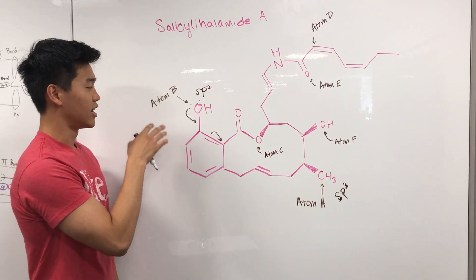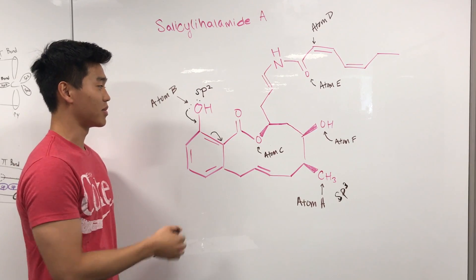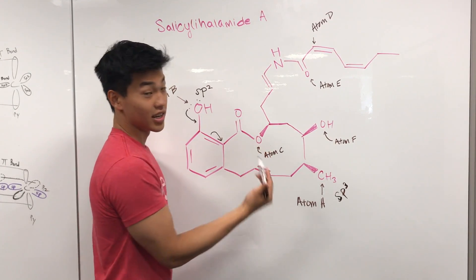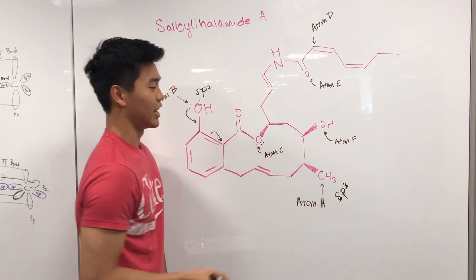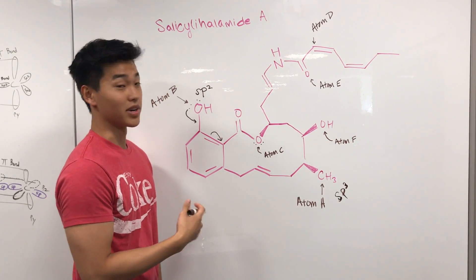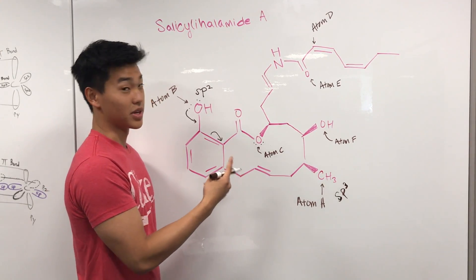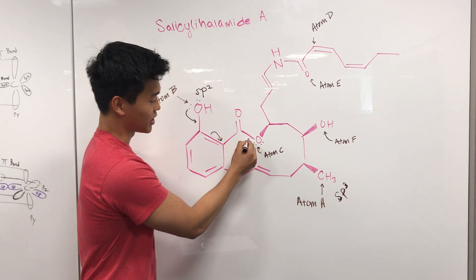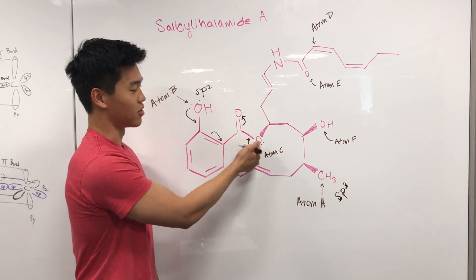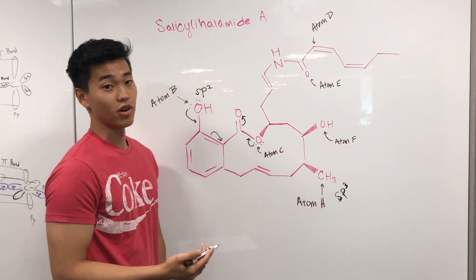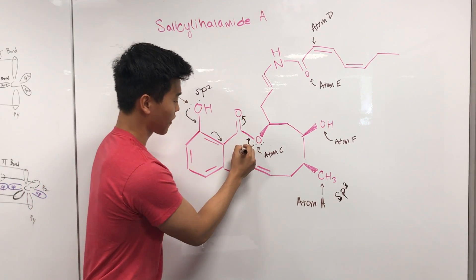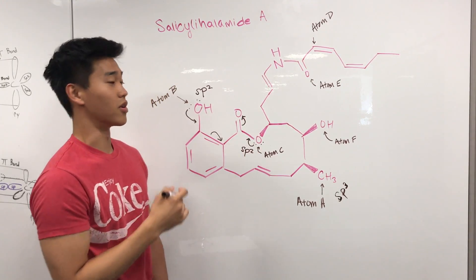Like Frank said, this is why steric number minus one doesn't always work — you have to account for resonance, and that's the tricky part of these problems. Moving to atom C: drawing in the lone pairs again. Can it sacrifice more p orbitals to form a double or triple bond? If we push these lone pairs, it would overload the adjacent carbon, but those electrons can move up to the oxygen to form a double bond there — a valid resonance form. So atom C is sp2 hybridized.